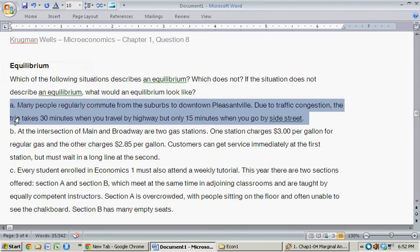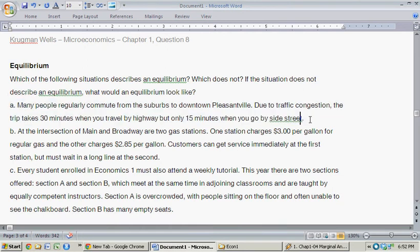So let's start with example or question A. Many people regularly commute from the suburbs to downtown Pleasantville. Due to traffic congestion, the trip takes 30 minutes when you travel by highway and only 15 minutes when you go by side streets.